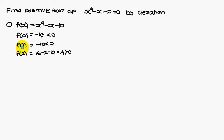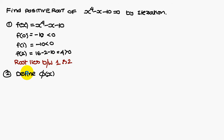Therefore, the root lies between values of opposite signs. f of 1 is a negative value, f of 2 is a positive value. Therefore, the root lies between 1 and 2. Next, you have to define a new function phi of x which satisfies some conditions.